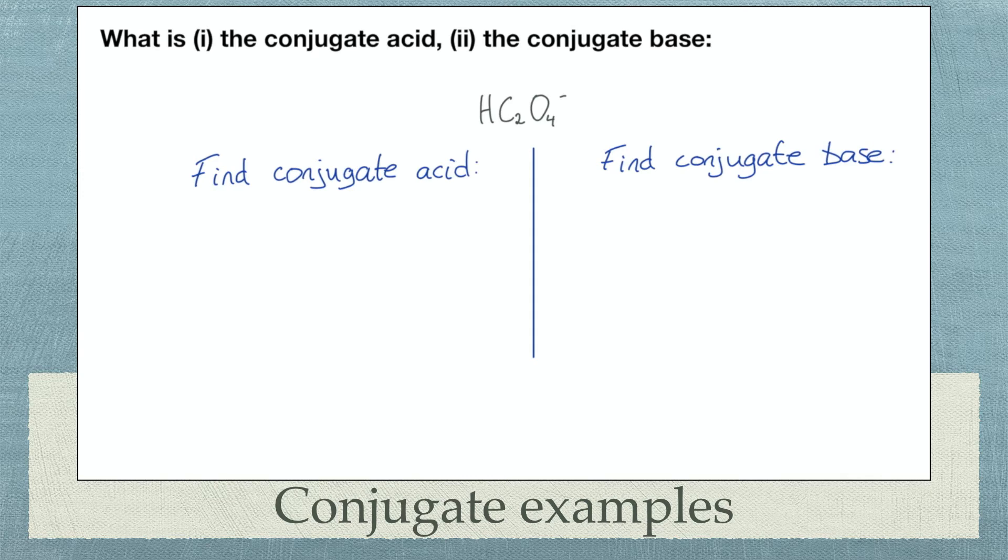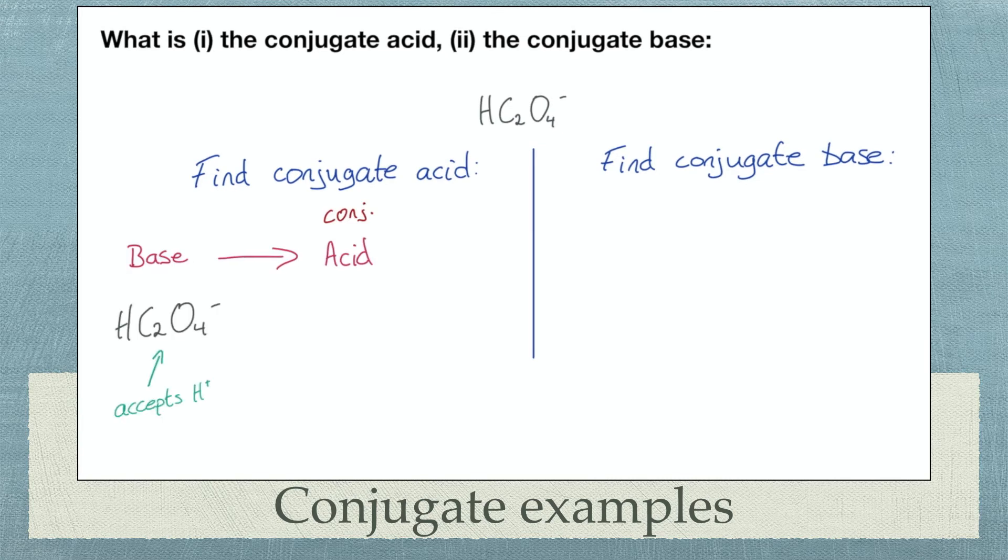Let's see how to find the conjugate acid or the conjugate base. In this question we are asked to find both. I always do these the same way and it never lets me down. Step 1. We are looking for the conjugate acid. Therefore we have HC2O4 minus is the base. I write down the ion with base above it.